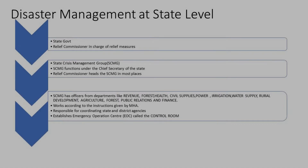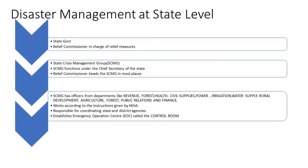Now, disaster management at the state level. It is the state government that is responsible for coordinating immediate relief operations in the affected area, and it is the relief commissioner who is in charge of relief measures. The state operates through the revenue department, also called the relief department. The state government forms a committee called the State Crisis Management Group (SCMG), which functions under the leadership of the chief secretary of the state. In some states, the relief commissioner also heads the SCMG — both are the same person.